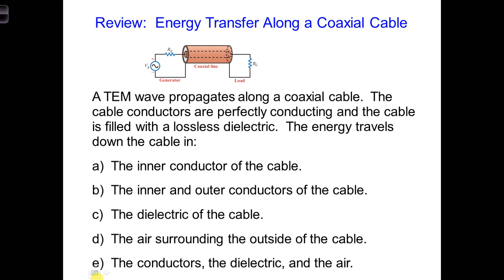Remember what a TEM wave is? The conductors in the coaxial cable are perfectly conducting, which means the electric fields inside the conductors are exactly zero because the current flows on the surface of the conductors. The cable is filled with a lossless dielectric, meaning the region between the two conductors is non-conducting.